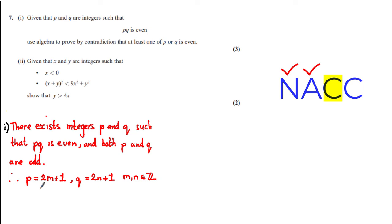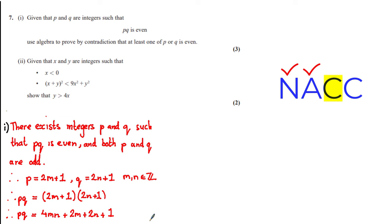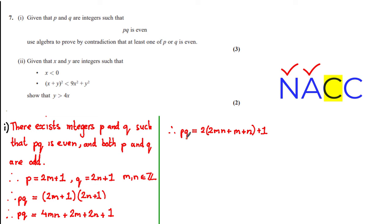Performing calculations with these two expressions, let's multiply p and q and see the outcome. Multiplying p and q gives: pq = 4mn + 2m + 2n + 1. We can then factor out 2 from part of this expression, giving pq = 2(2mn + m + n) + 1.